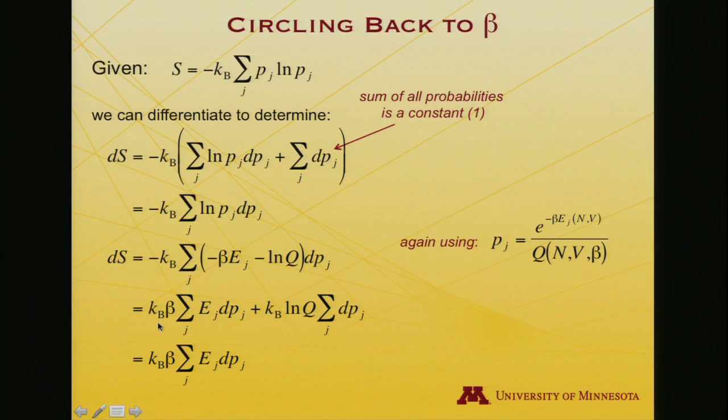Okay, so expand that out. I have kb times beta, the two negative terms canceled. Sum over j, energy, dp, plus k, I'll pull out this constant log q. Oh, look, there's that sum over dp again. Still equal to 0. And so that term goes away.